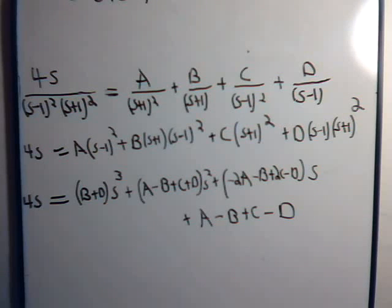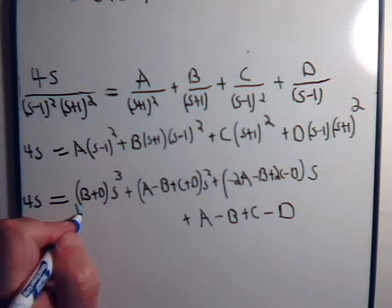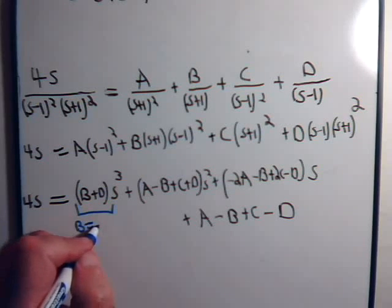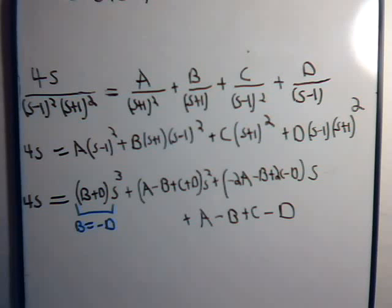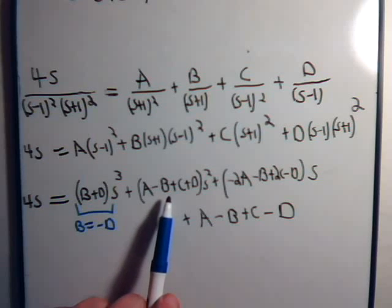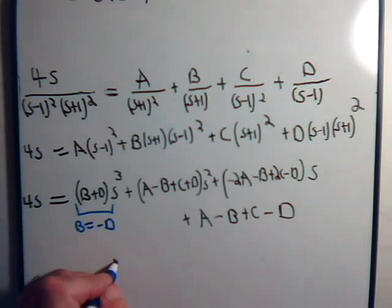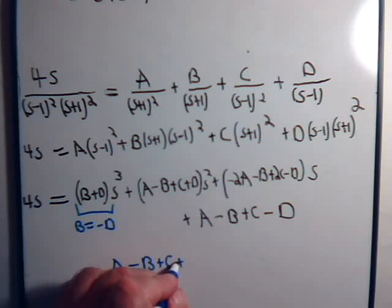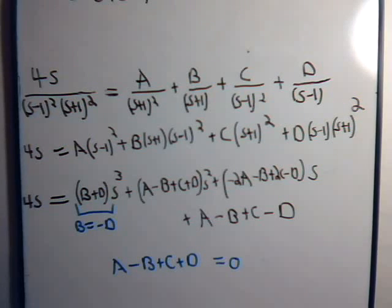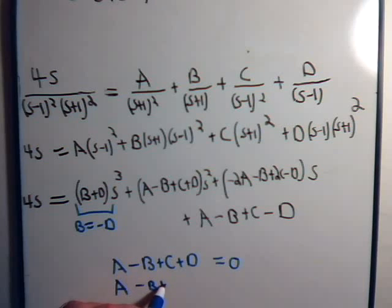From B plus D equals zero, we get B equals minus D right away. Then from the s squared equation we have A minus B plus C plus D equals zero, and from the constant equation we have A minus B plus C minus D equals zero.